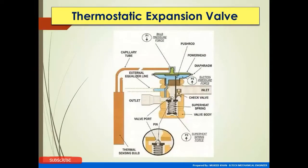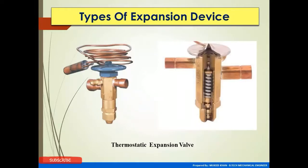This is the sectional view of an expansion valve, where you can see the bulb pressure which is the force acting on the power head, the inlet of the refrigerant, the outlet of the refrigerant, the superheat spring, the valve body, the check valve, the valve port, and outlet. This is how a thermostatic expansion valve cross-sectional view looks like.